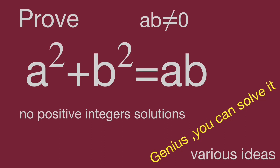Hello, you are watching Barahibo Math Genius. We have a simple and interesting question: given ab not equal to zero, prove that the equation a squared plus b squared equal to ab has no positive integer solutions. There will be a couple of methods to prove that. In this video, we share three ideas to get the result. Please pause the video and try it, then keep watching to see the solution.